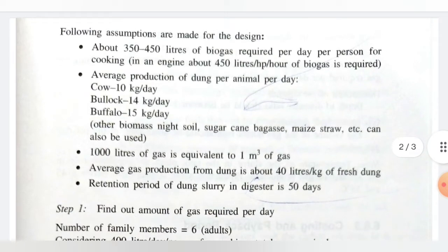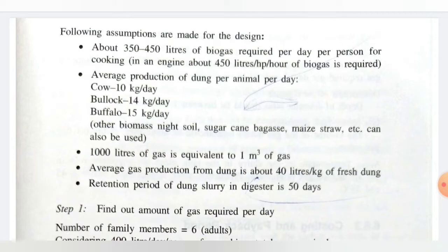The following assumptions are made for the design. About 350 to 450 liters of biogas is required per day per person for cooking. For an engine, about 450 liters per hour of biogas is required. Average production of dung per animal per day: cow produces 10 kg/day, bullock 14 kg/day, and buffalo 15 kg/day. Other biomass such as night soil, sugarcane bagasse, maize straw, etc. can also be used.